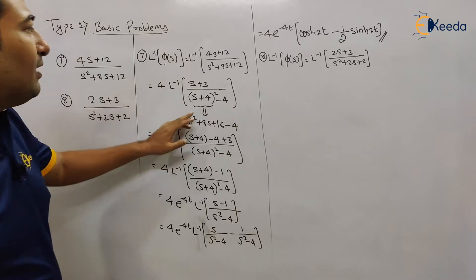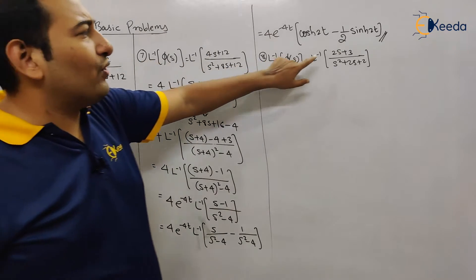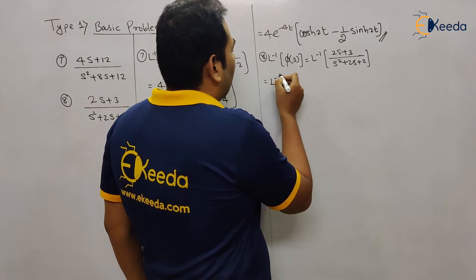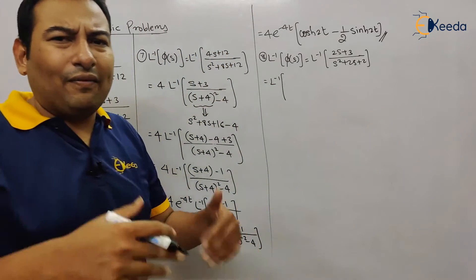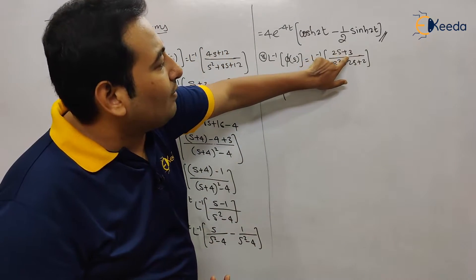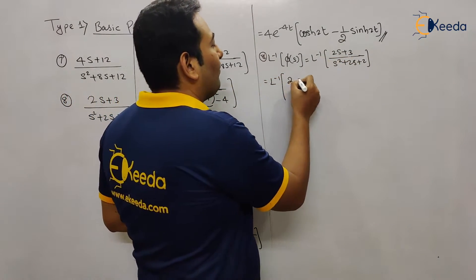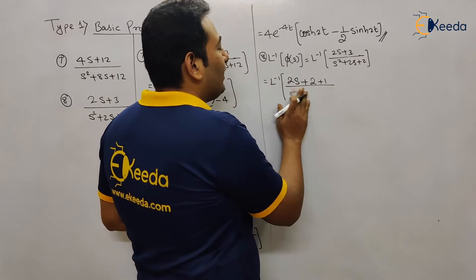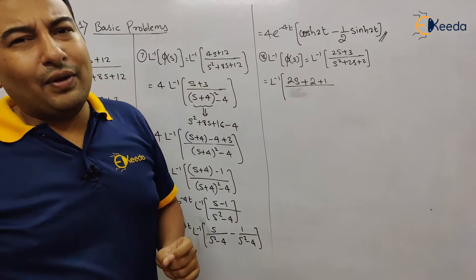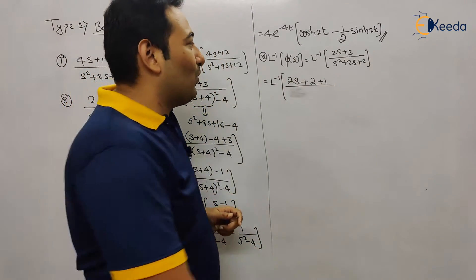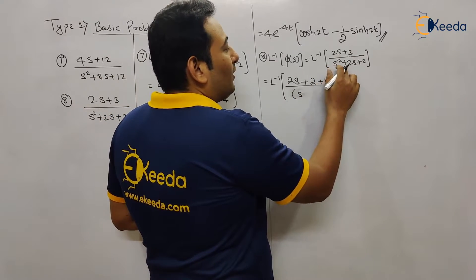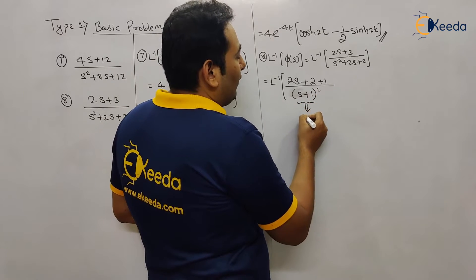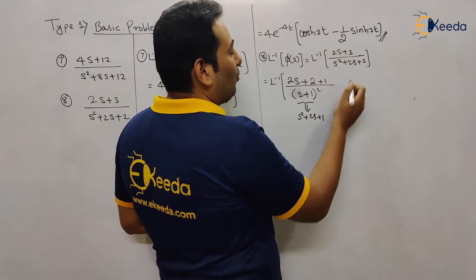Now let us discuss problem number eight. Here also we can proceed with a similar procedure — you could take two common — but there is one more method. What we are doing is splitting the three in the numerator into two plus one. And remember the note: whenever we get a quadratic equation in the denominator, convert it to a perfect square. The perfect square form gives s plus one the whole square; expanding gives s squared plus 2s plus 1, but we want 2, so we need to add one.